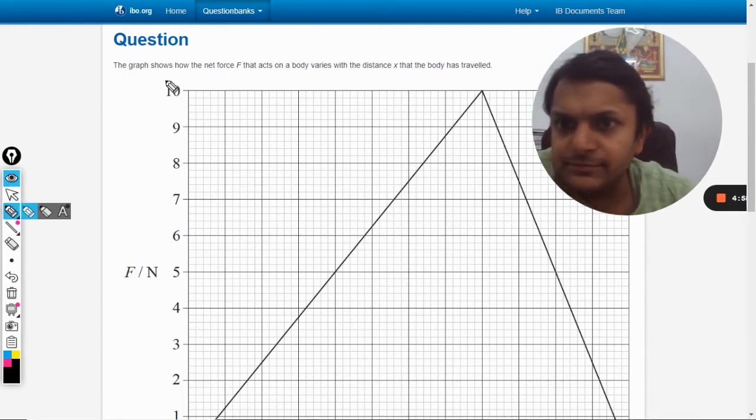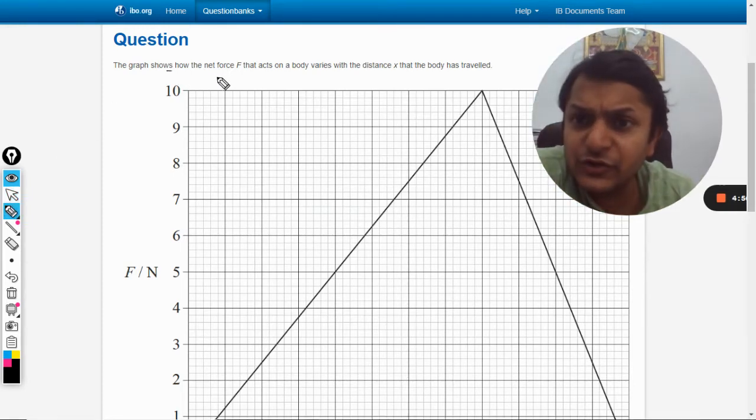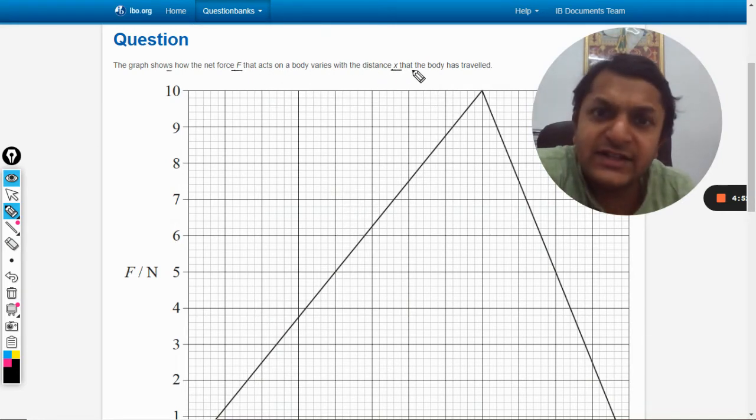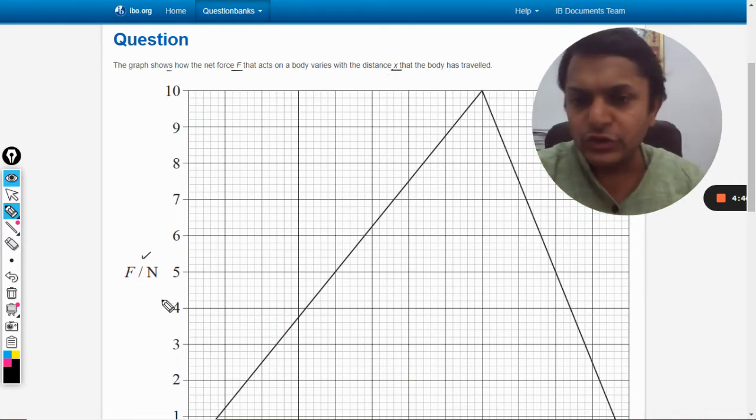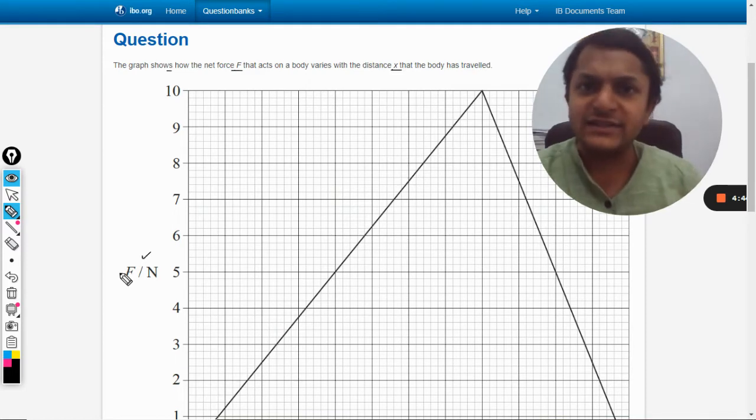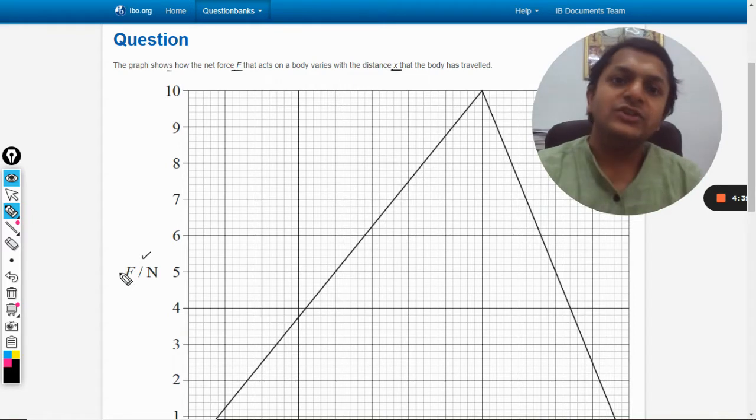Okay, in this question the graph shows how the net force Fx on a body varies with distance. So this is a graph which is like an F-S graph. So here you have force, that is newton, and on x-axis, which is not shown in front of you now, I would be moving this thing now. So on x-axis there is distance x.